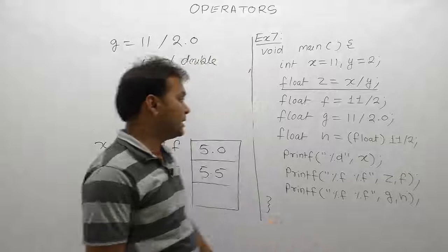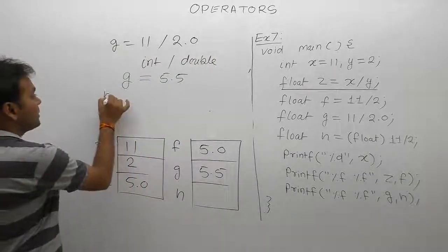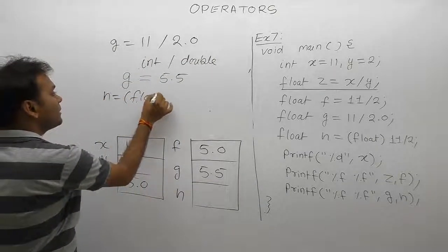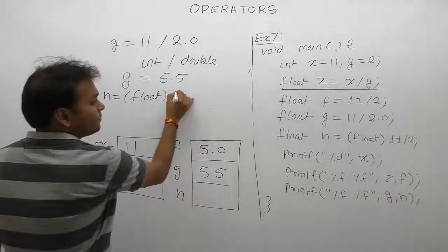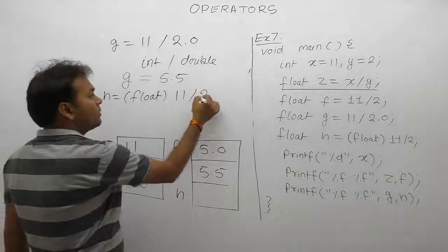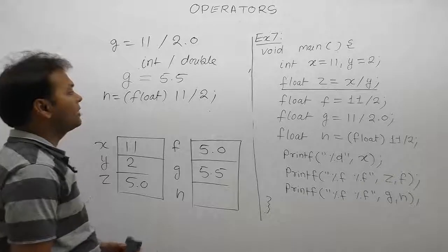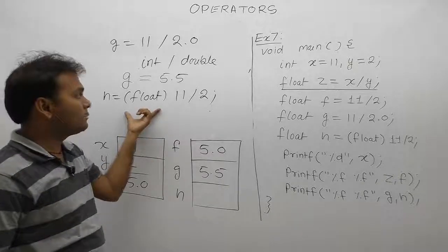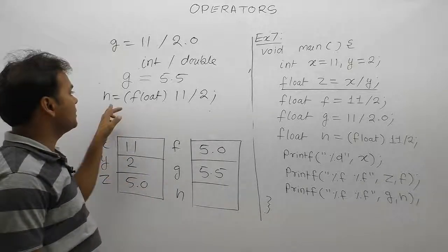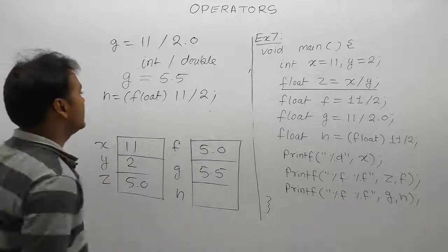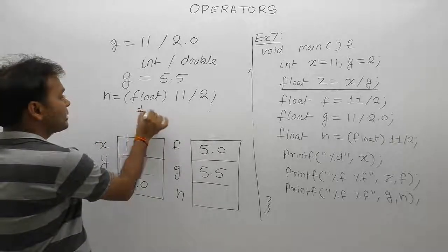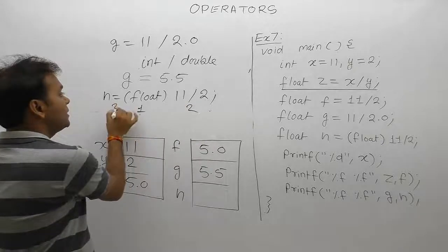For h, we use type casting. h equals to type cast into float. Type casting is a unary operator. In the operator list, type casting is unary, while assignment and division are binary operators. Highest priority is taken by type casting, then division, and then assignment.